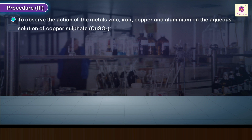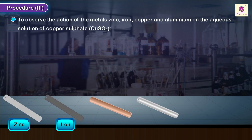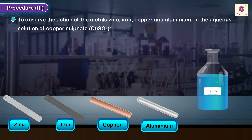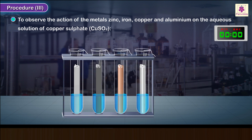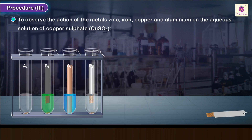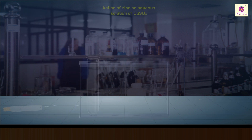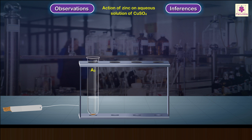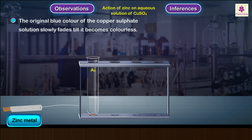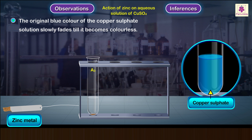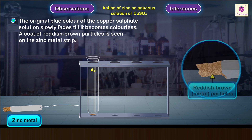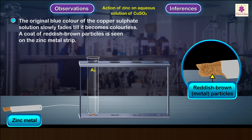Procedure 3: To observe the action of the metals zinc, iron, copper, and aluminum on the aqueous solution of copper sulfate. Repeat Procedure 1 with aqueous solution of copper sulfate instead of zinc sulfate. Carefully pull out each metal strip and observe the surface. Test tube A3 containing zinc metal: the original blue color of the copper sulfate solution slowly fades until it becomes colorless. A coat of reddish-brown particles is seen on the zinc metal strip. Zinc reacts with the copper sulfate solution.